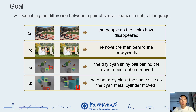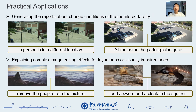The goal of Change Captioning is to describe the difference between a pair of similar images. It has many practical applications, such as generating reports about change conditions of a facility and explaining complex image editing effects for visually impaired users.